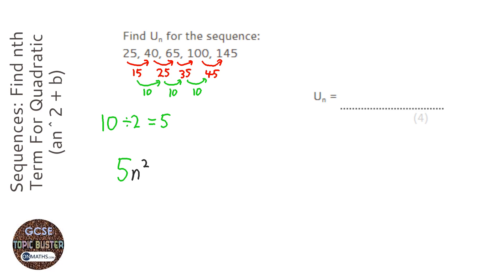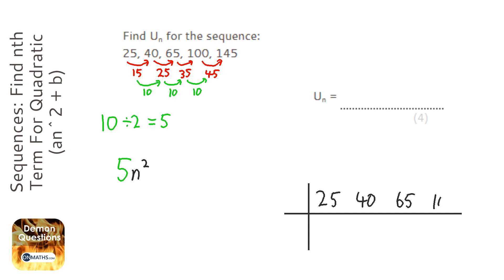Now the way of doing this is to write out the sequence of 5n². So let's do ourselves a little table down here, and we're going to have our sequence up on the top: 25, 40, 65, 100, and 145.